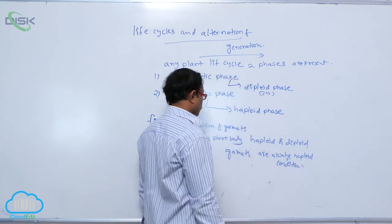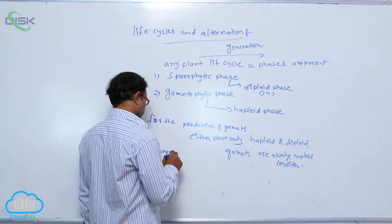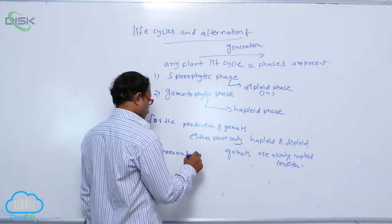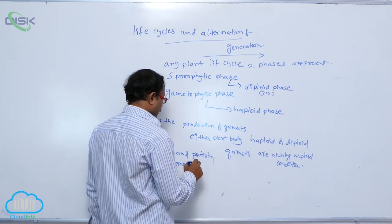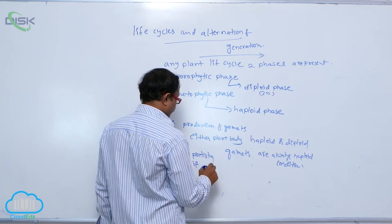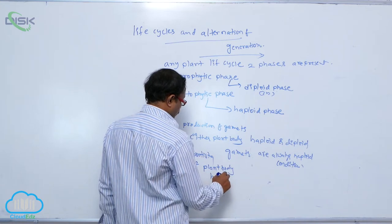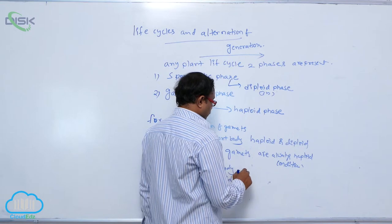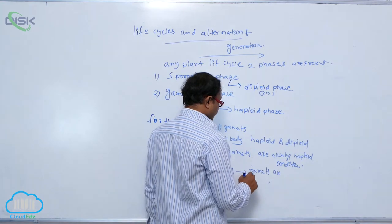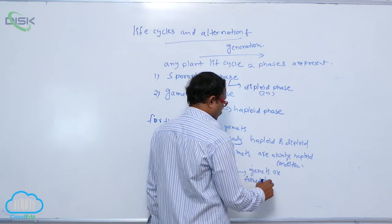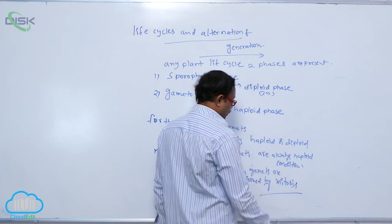For example, in some monera and protista, gametes are formed by mitosis condition, mitotic division. Only that mitosis.